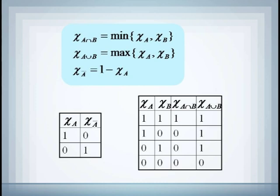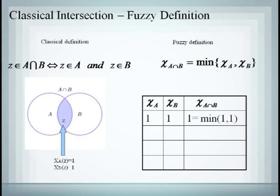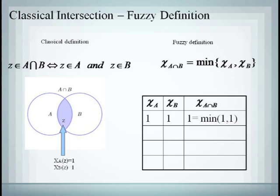We should point out here that these definitions for intersection, union, and complement are consistent with our classical set theory. For instance, if Z belongs to both sets, then both membership values are 1. Since the minimum of 1 and 1 is still 1, we have that Z belongs to the intersection.